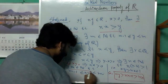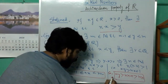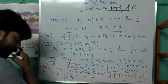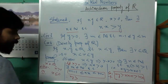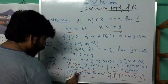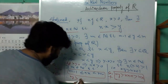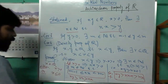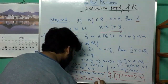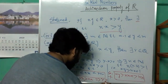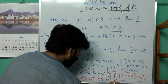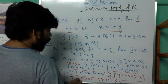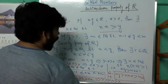Combining these two results: n·y > n·x + 1 > m. Therefore y > m/n > x. Thus, if x is positive, we establish that there exists a rational number m/n between x and y.